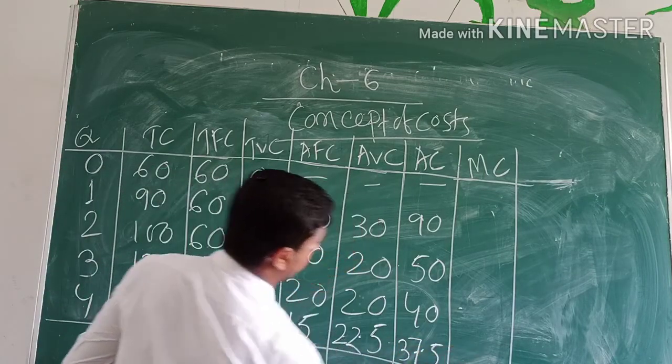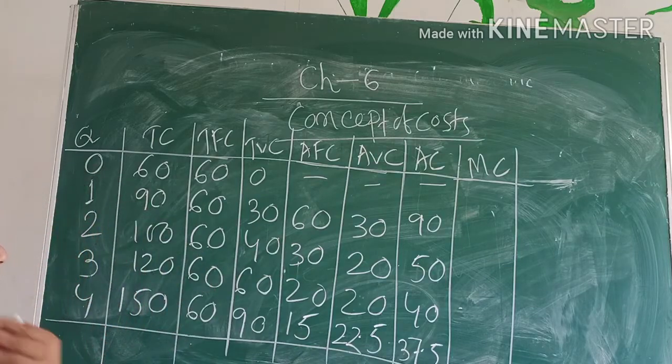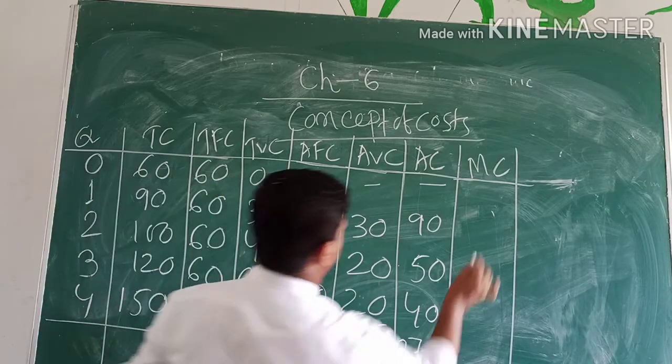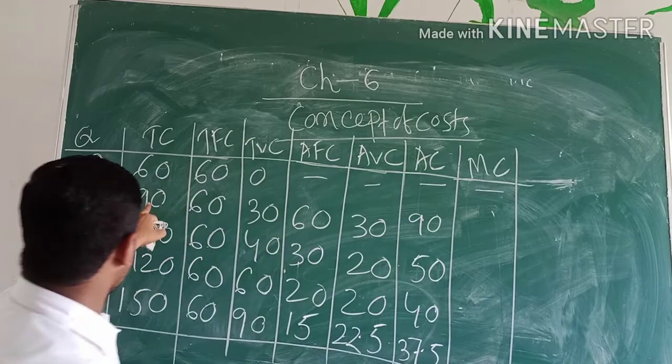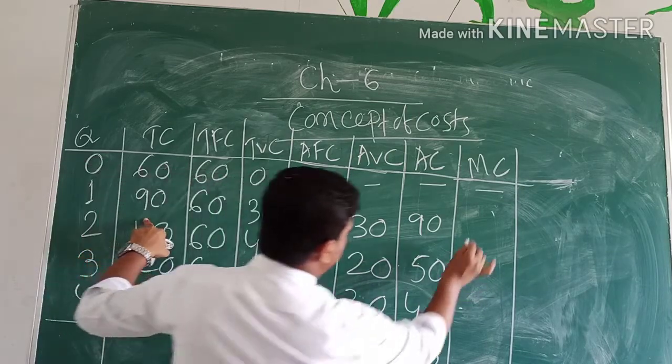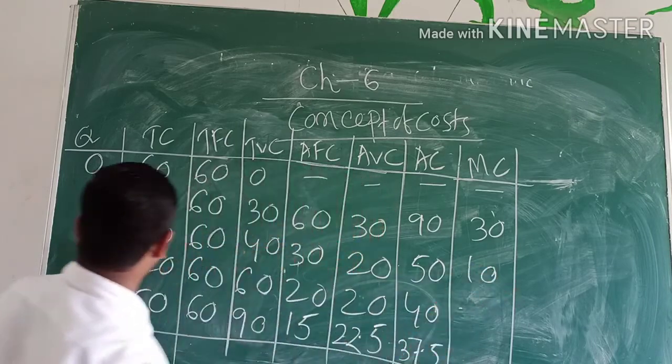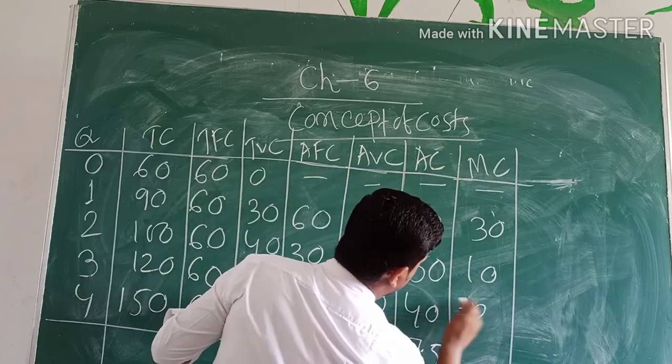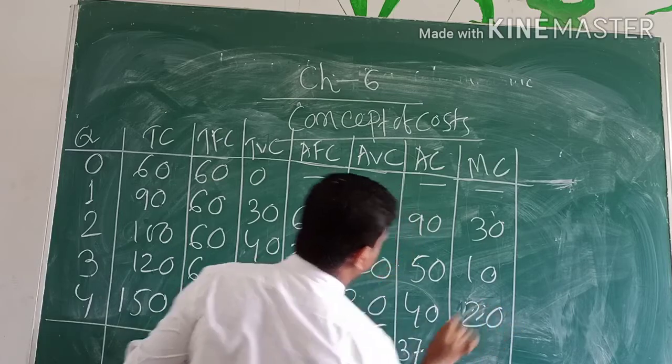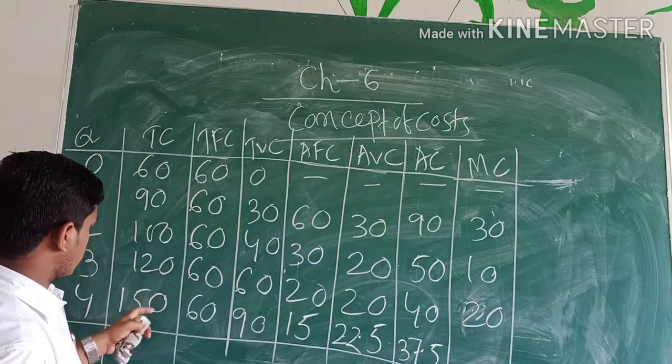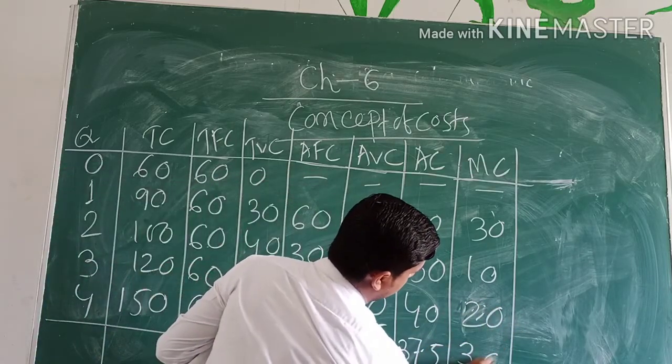Then MC is change in TC divided by change in Q. Undefined, then 30, then 100 minus 90 is 10, then 120 minus 100 is 20, then 150 minus 120 is 30.